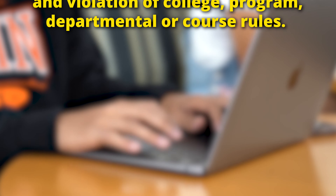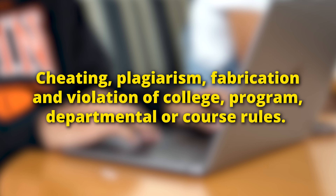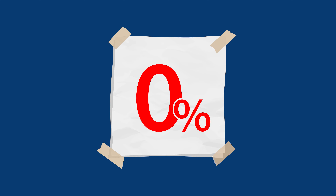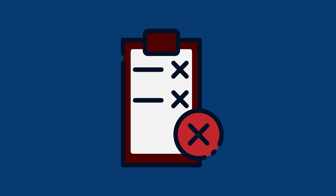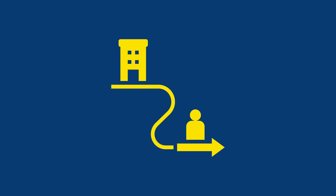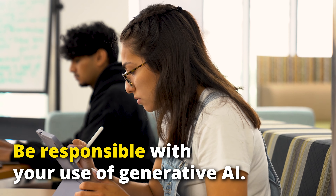Students turned into the Aggie Honor System Office for unauthorized use of generative AI have been found responsible for cheating, plagiarism, fabrication, and violation of college, program, departmental, or course rules. Sanctions imposed for unauthorized use of generative AI could include academic sanctions of zeros, grade reductions, failing the course, and even educational and university sanctions of extra requirements for the course or educational programs, and being suspended or expelled from Texas A&M.